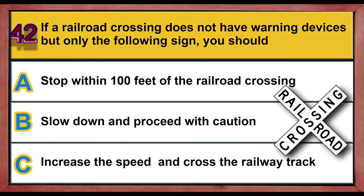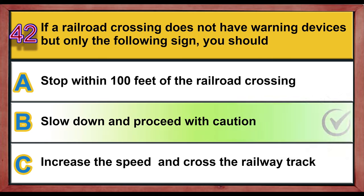Question 42. If a railroad crossing does not have warning devices but only the following sign, you should: A. Stop within 100 feet of the railroad crossing. B. Slow down and proceed with caution. C. Increase the speed and cross the railway track. Correct answer is B: Slow down and proceed with caution.